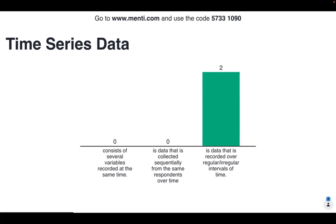Do you think that time series data consists of several variables recorded at the same time? Is it data collected sequentially from the same respondents over time? Or is it data that's recorded over regular or irregular intervals of time? A very obvious clue in this answer — and I'm glad to see everyone is on the right track. You would be right in saying that time series data is data that is recorded over regular intervals of time. This is the summary for time series data.